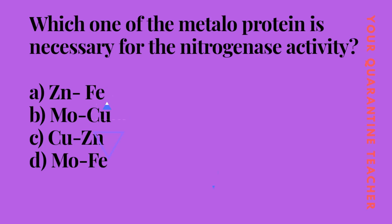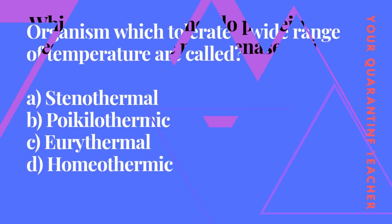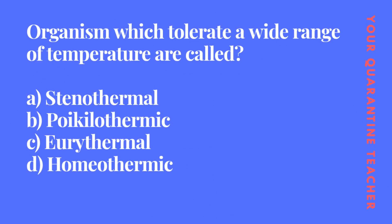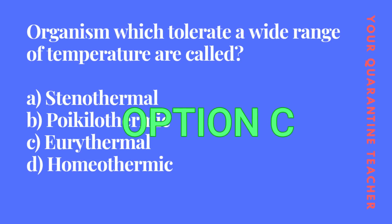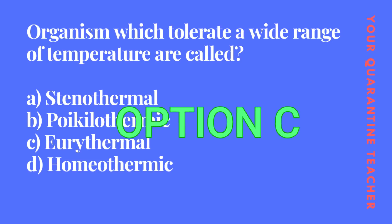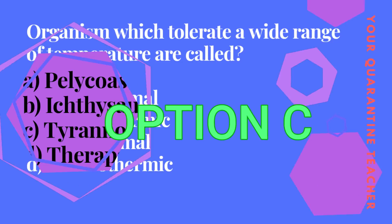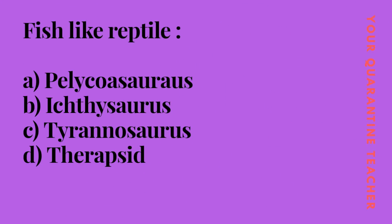Organisms which tolerate a wide range of temperature are called: Option A Stenothermal, Option C Eurythermal, Option D Homeothermic. The answer is Option C Eurythermal.